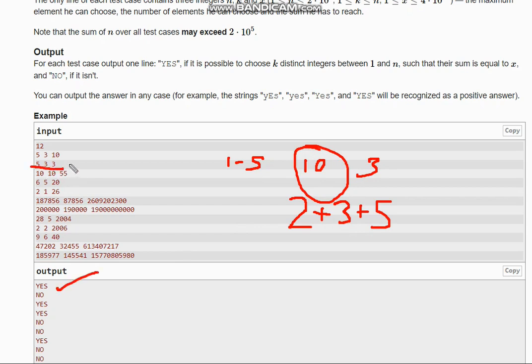For the second case you see 5, 3. So you need to choose any 3 elements and you need to have 3 as the sum. So when you take any 3, suppose 1 plus 2 plus 3, this will be what? Greater than 3. So this is not possible.